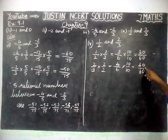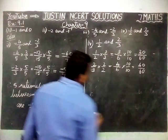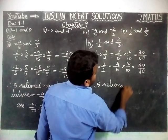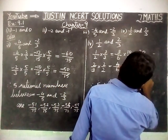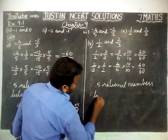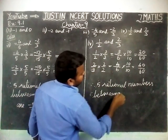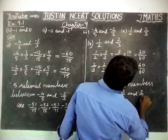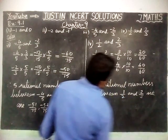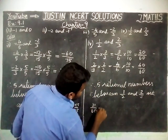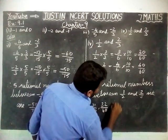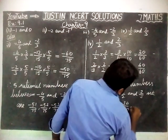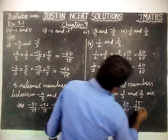So, in between 30 by 60 and 40 by 60, there are 10 numbers. Out of those, we can write any 5 numbers. Therefore, 5 rational numbers between 1 by 2 and 2 by 3 are: 31 by 60, 32 by 60, 33 by 60, 34 by 60, and 35 by 60.